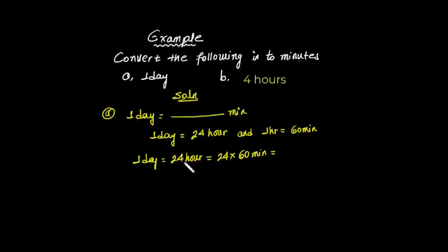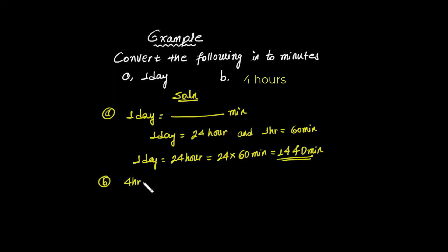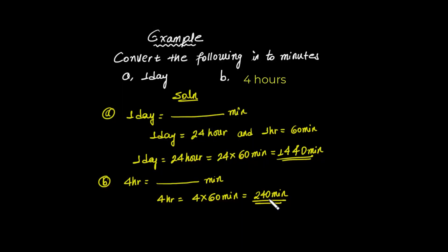Now for 4 hours: 4 hours is equal to 4 times 60 minutes, because there are 60 minutes within 1 hour. This is simple multiplication.